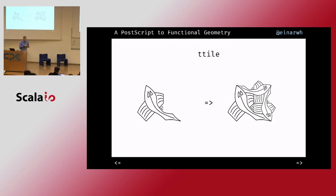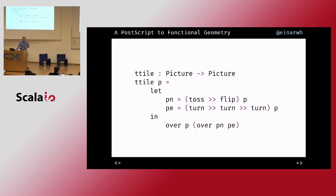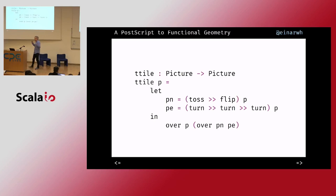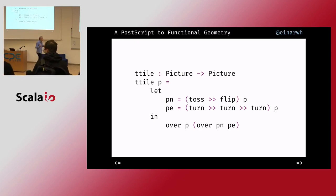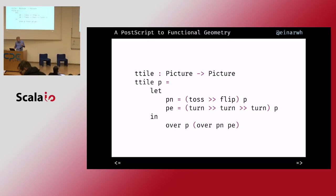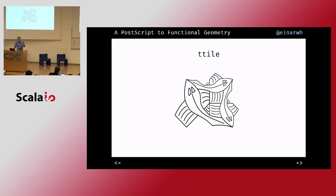One of the basic building blocks in the paper is called a t-tile. Using the simple transformations we've defined, I take whatever picture I was given, toss and flip it, and then take that result, turn it three times, and render everything on top of each other. That renders the t-tile.